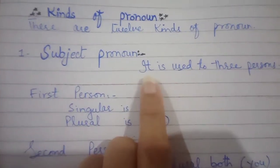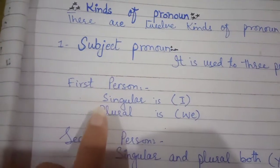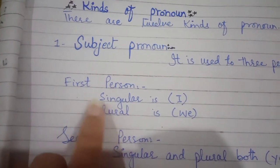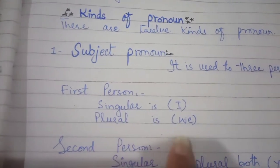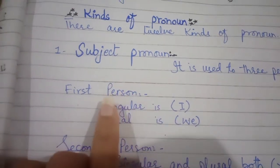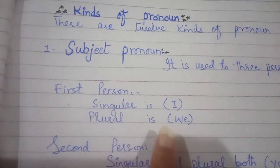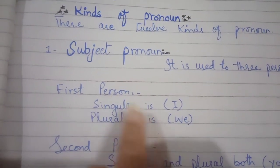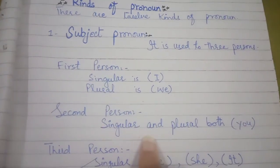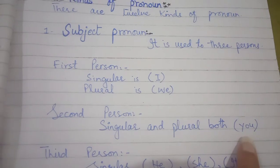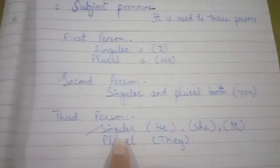The first one is subject pronoun. It is based on 3 persons. First person singular will be 'I' and plural will be 'we'. When we talk about first person pronoun it will be 'I', and in plural condition of first person it will be 'we'. Second person will cover both singular and plural, and that second person will be considered as 'you'.